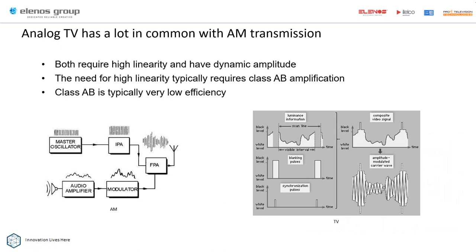Analog TV has a lot in common with AM transmission. Both require very high linearity and have dynamic amplitude. The need for high linearity typically requires class AB amplification, which is very low efficiency. An AM signal and a television signal look very similar in terms of the transmitter block diagram. I should stress that we're talking about analog TV here — digital TV is a different bag of worms. It still requires linear amplification, but the waveform looks a lot different.